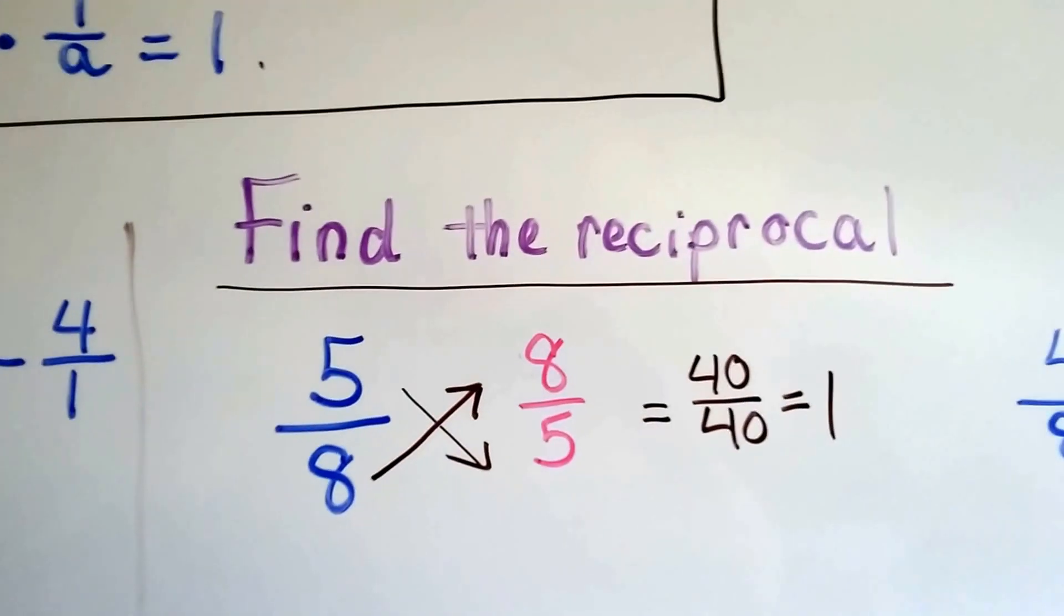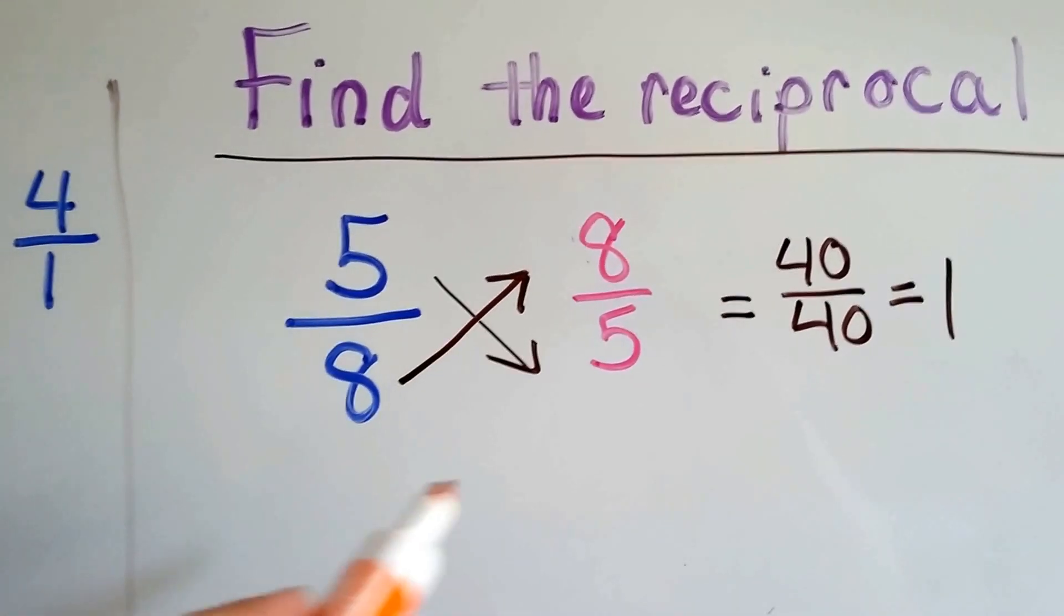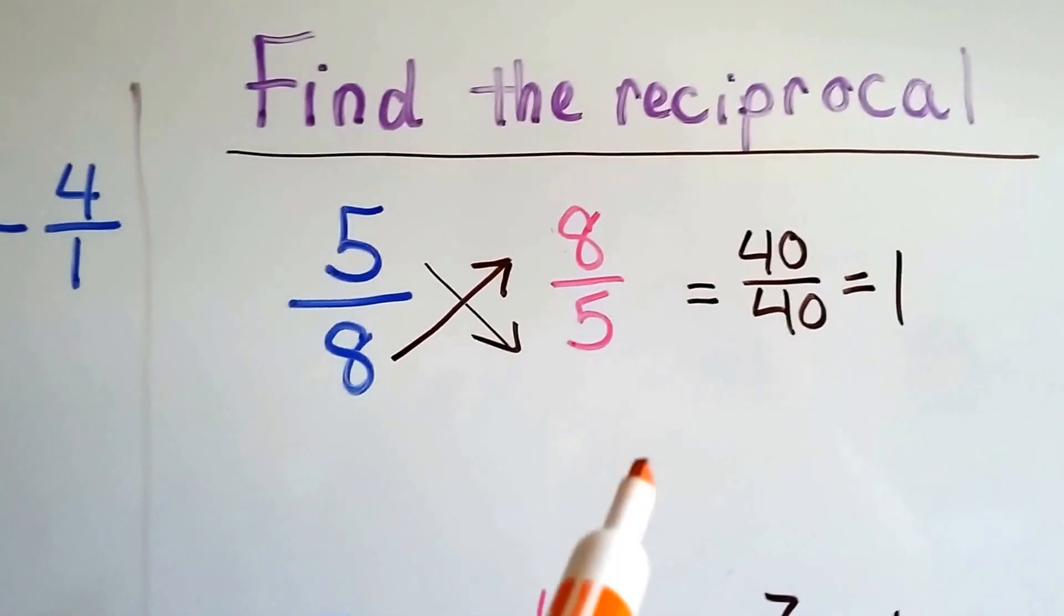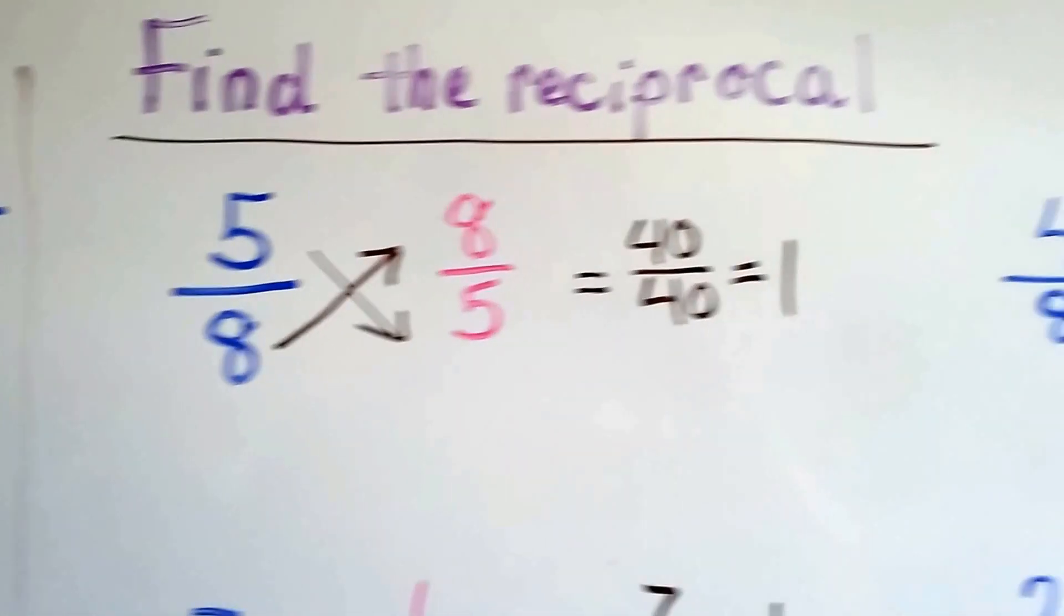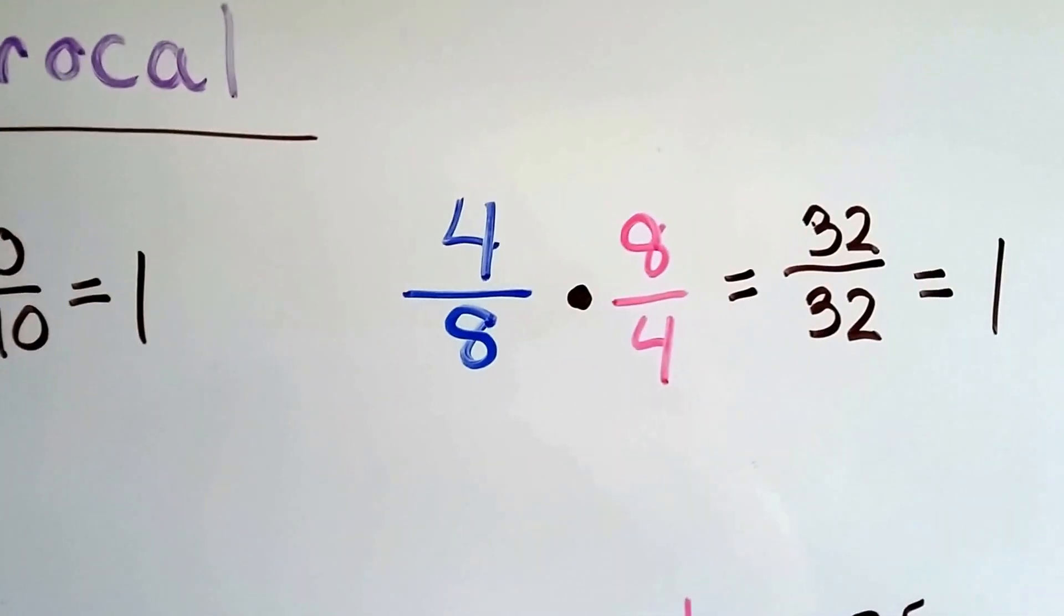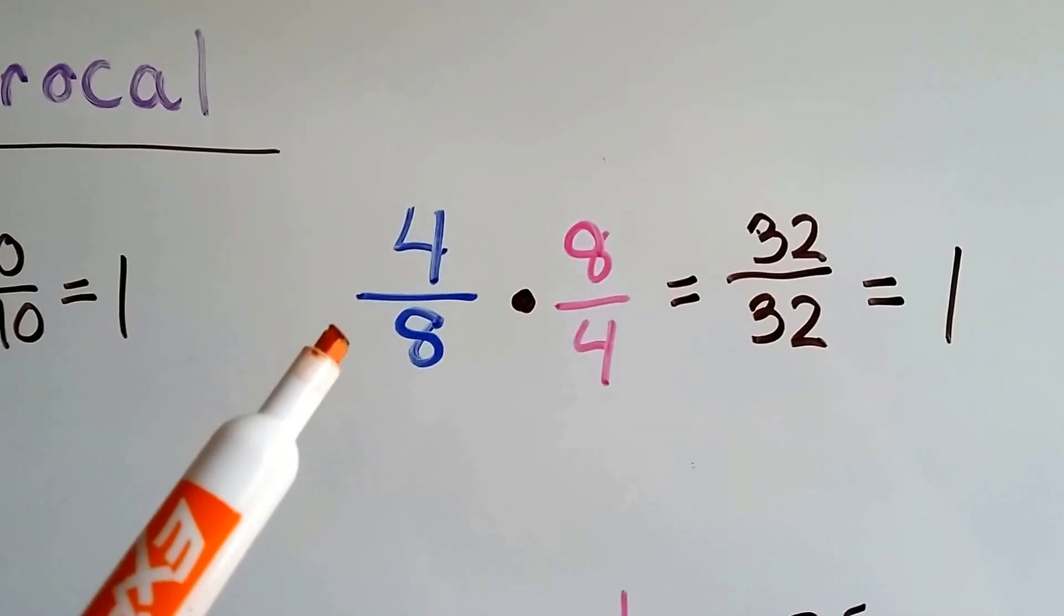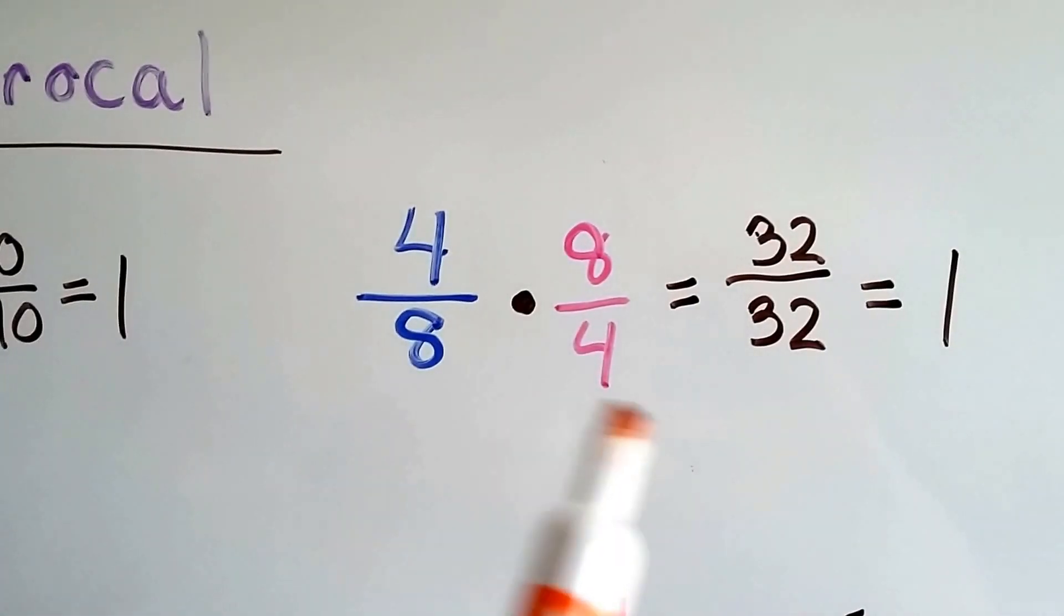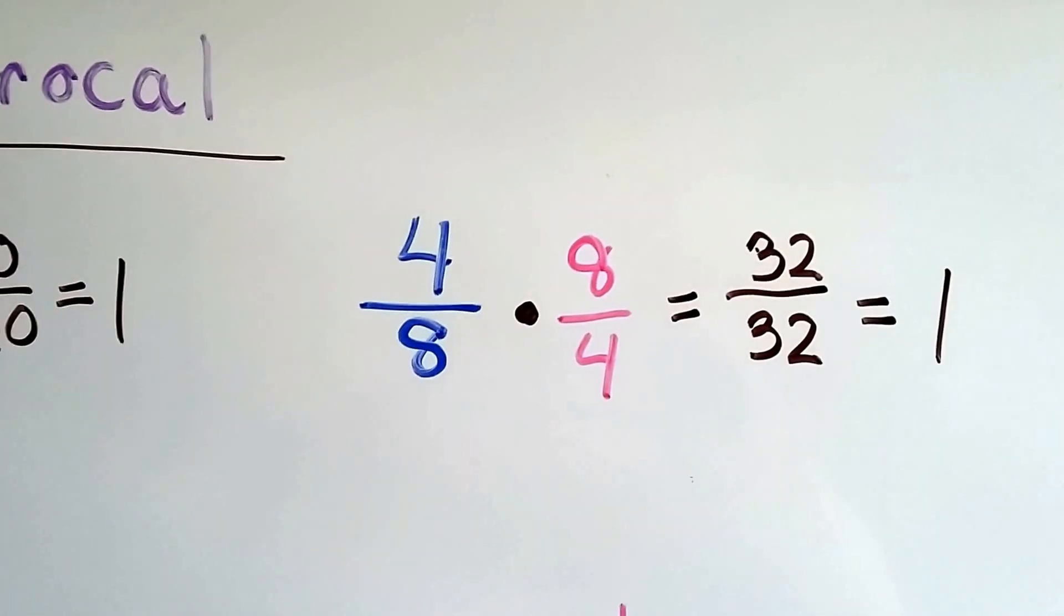So if it says find the reciprocal and we've got 5 eighths, all we have to do is swap the numerator and denominator, and we've got 8 fifths. When we multiply them, we get 40 over 40. That equals 1. If we have 4 eighths, don't think you need to simplify this. The reciprocal would be 8 over 4. We multiply them straight across, and we get 32 over 32. That equals 1.